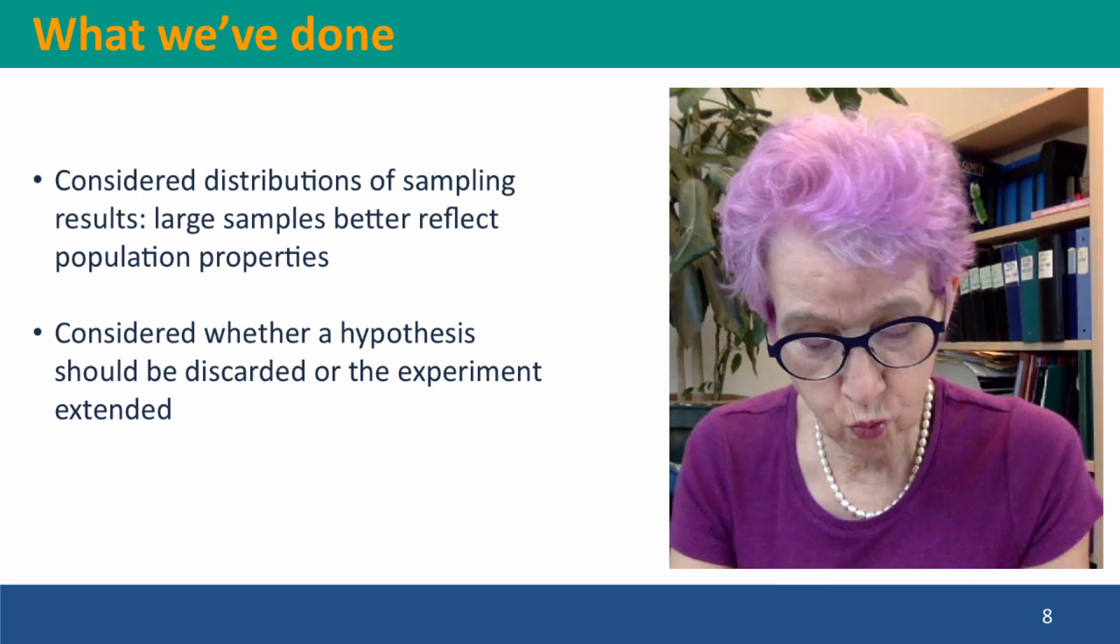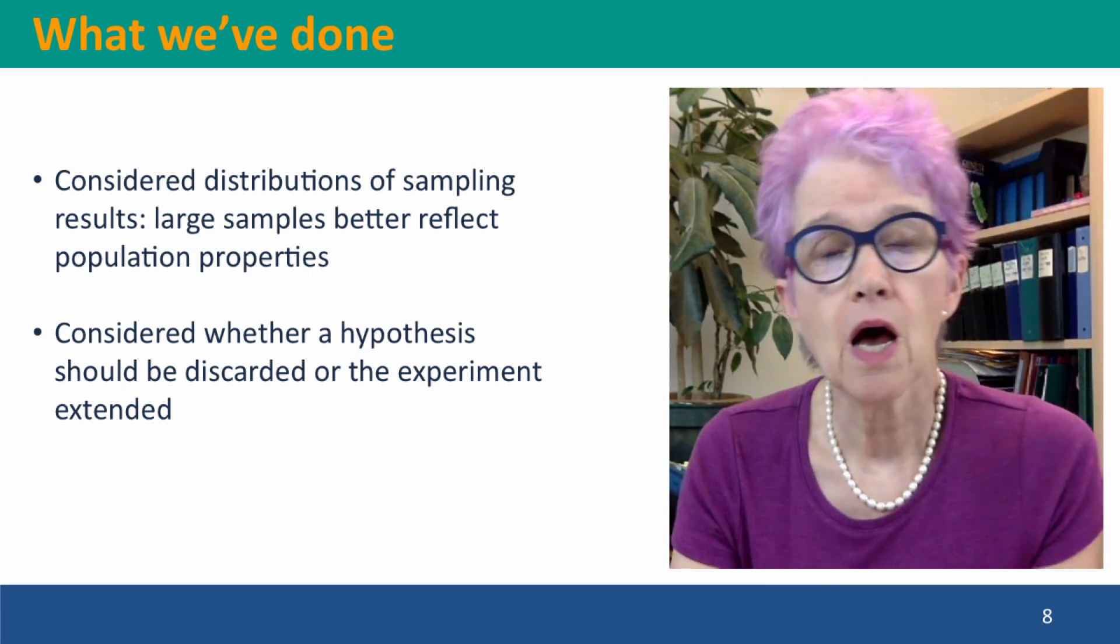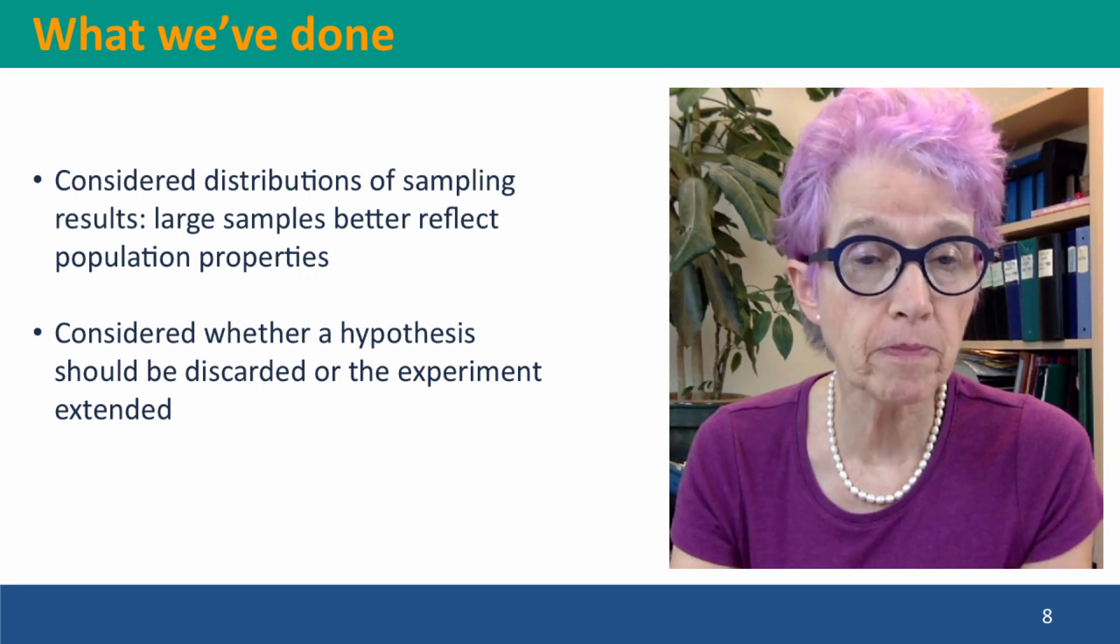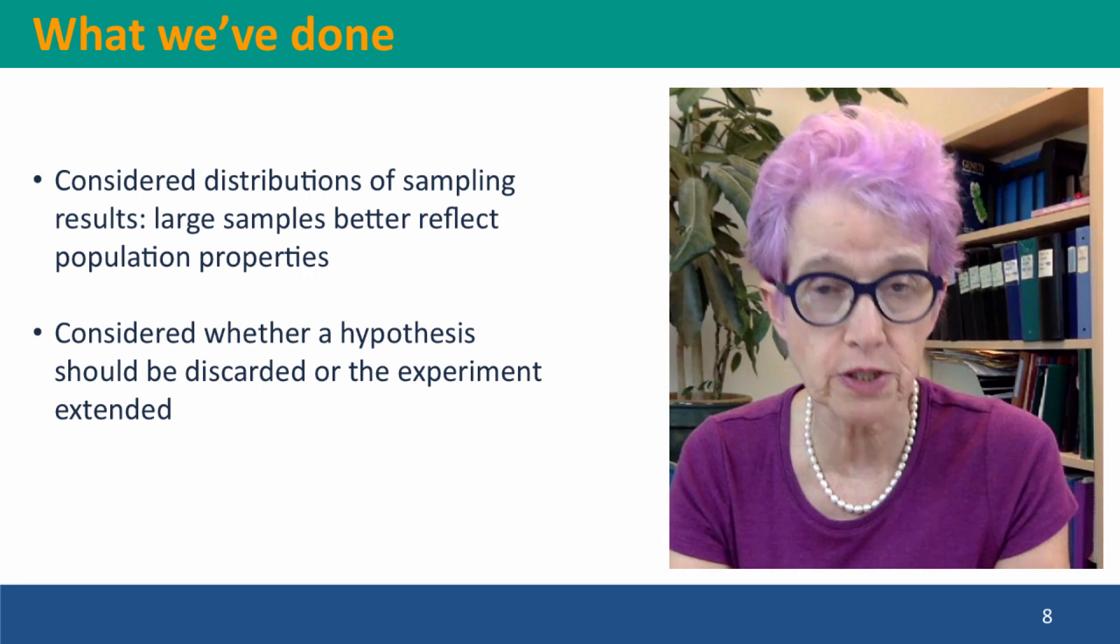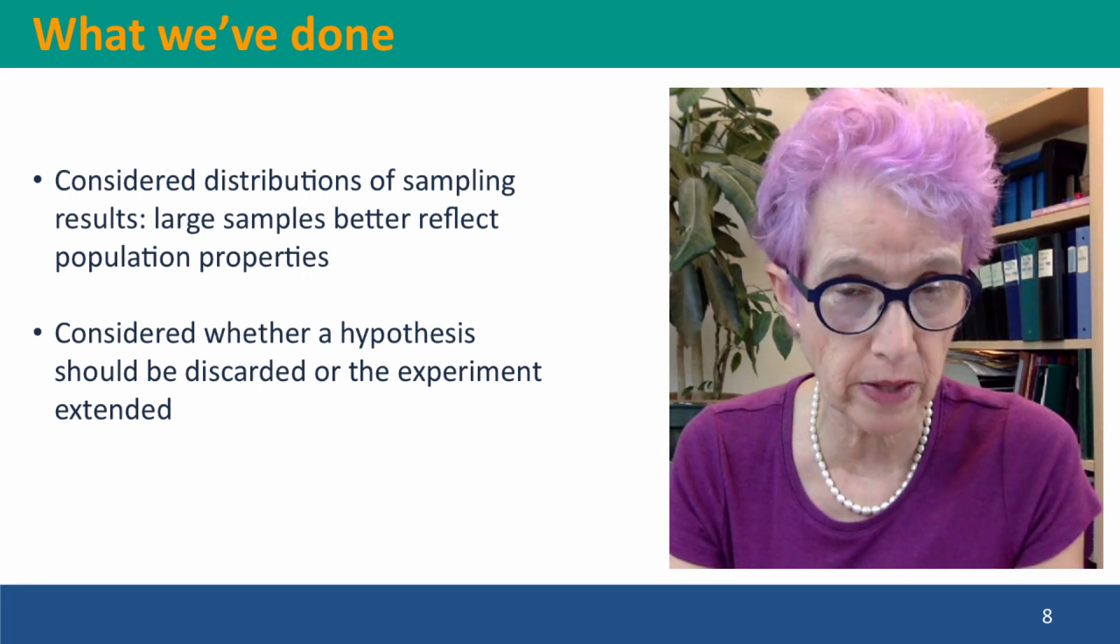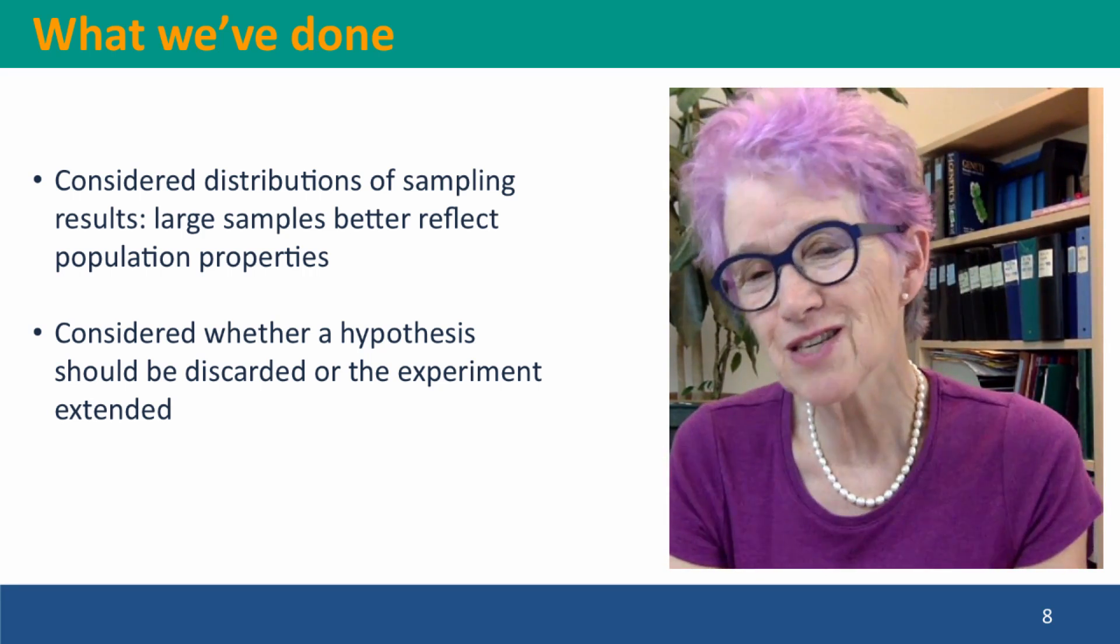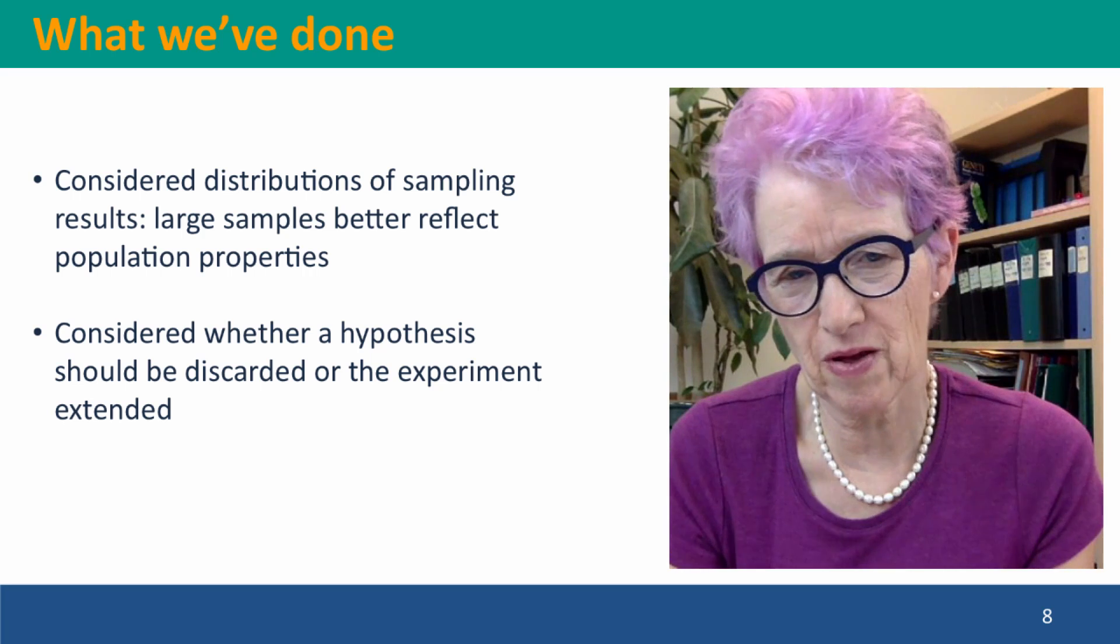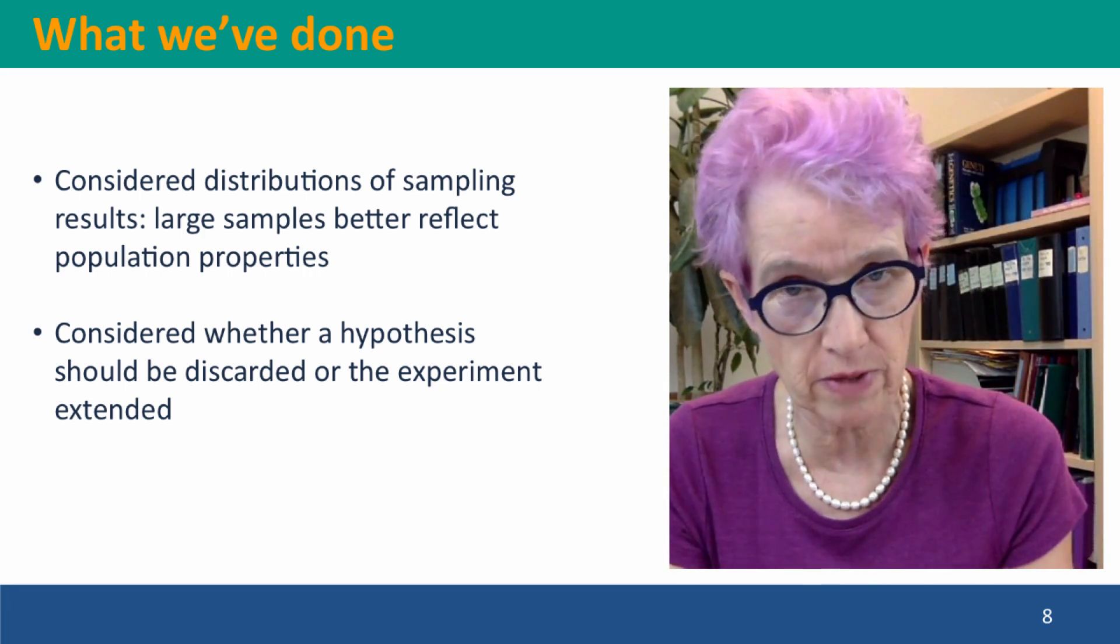So we've considered distributions of sampling results. Large samples better represent the population properties, and so they give us a better power of testing whether our observed results are consistent with our hypothesized expected results under a particular hypothesis. And then we've considered whether we should discard our hypothesis or not, depending on the experiment results, or whether we should just do a bigger experiment.